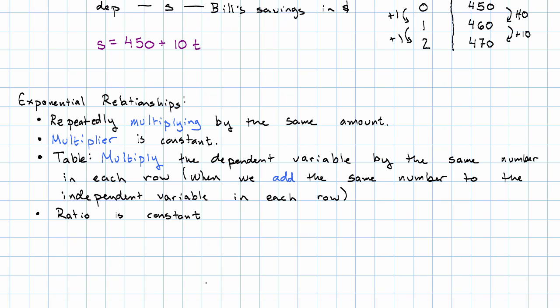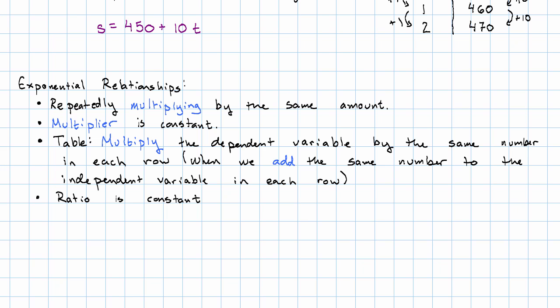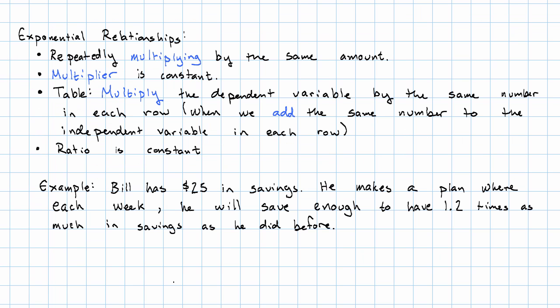Remember, change describes an additive relationship, ratio describes a multiplicative relationship. So let's see an example of an exponential relationship. Suppose Bill has $25 in savings and he makes a plan where each week he'll save enough to have 1.2 times as much in savings as he did before.